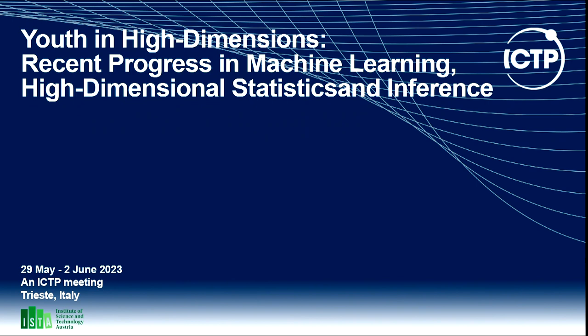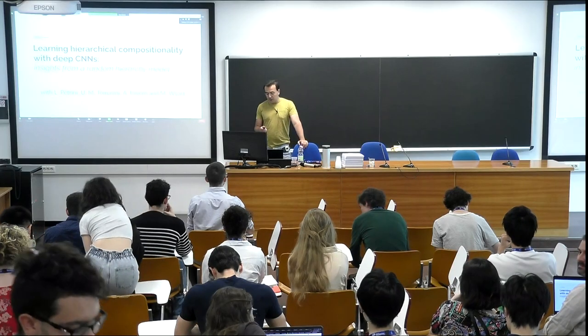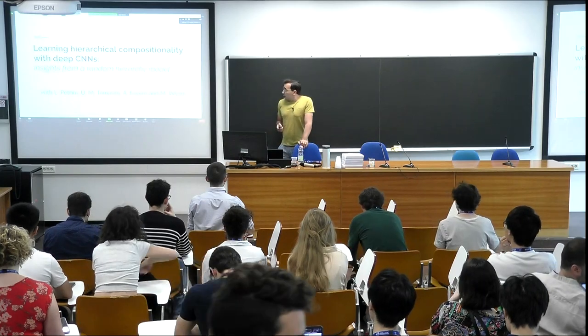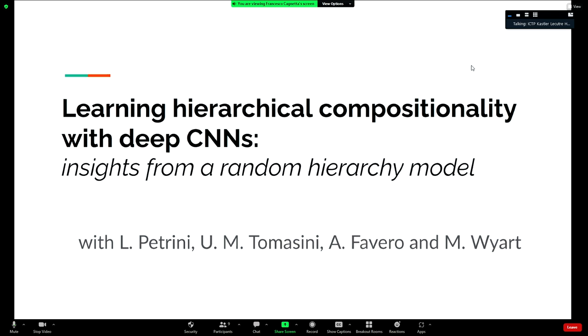Thank you very much, and I also want to thank all the organizers for setting this up and all of you for being here. In general, I'm interested in understanding which kind of functions deep learning is good at learning. Deep convolutional neural networks are very good at learning hierarchically compositional functions, which I will define over the course of the talk. Today I would like to tell you about our latest work on the random hierarchy model.